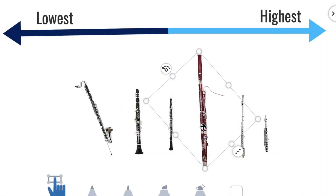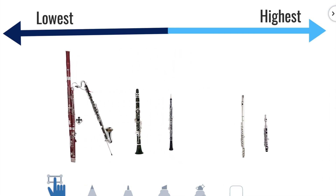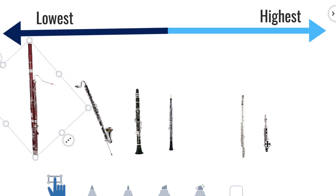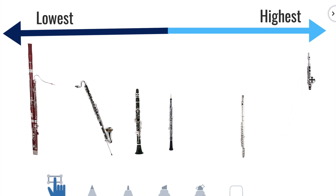In step 6, tap 'Add Response' and use the hand to arrange the instruments from the lowest sounding to the highest sounding. I'll get us started — I know that the bassoon is one of the largest woodwind instruments, so it's going to sound the lowest. But the piccolo is the smallest one and it sounds the highest. Finish rearranging the instruments from the lowest sounding to the highest sounding.